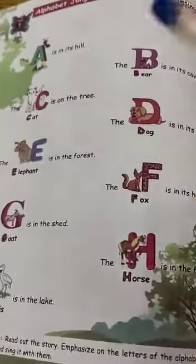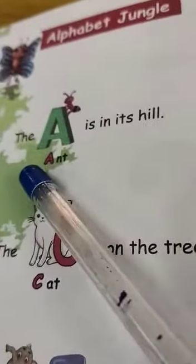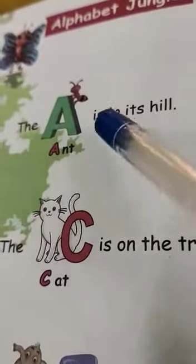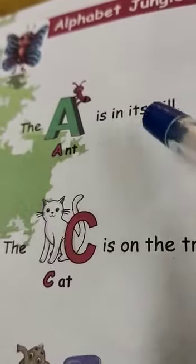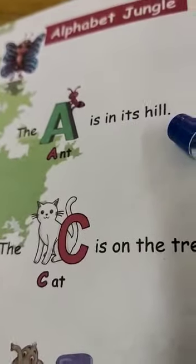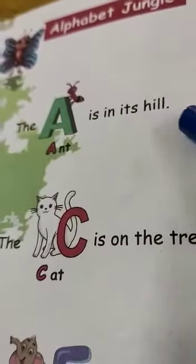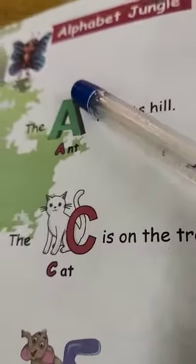Hello children, today we are going to see alphabet jungle. Here you can see: A-N-T, ant. A-N-T ant, I-S is I-N, I-T-S is H-I-L-L hill. The ant is in its hill. That is the ant, that is the hill.